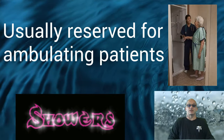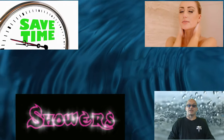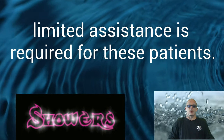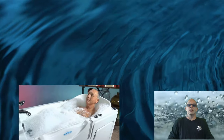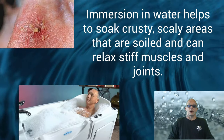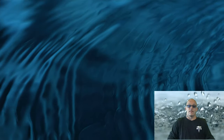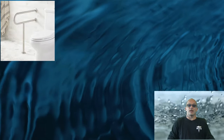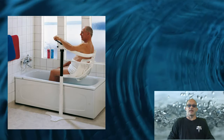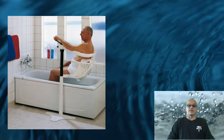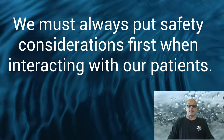Now let's talk about showers, which are usually reserved for ambulating patients. This form of hygiene can save time and refresh the client, and usually limited assistance is required. Some ambulatory clients who suffer from stiffness of the hands and arms can benefit from a tub bath. Immersion in water helps to soak crusty, scaly areas and can relax stiff muscles and joints. We must provide safety measures including handrails, a shower or tub chair, and a non-skid surface. Some tub baths can provide mechanical lifting to assist patients with mobility difficulties. We must always put safety considerations first.